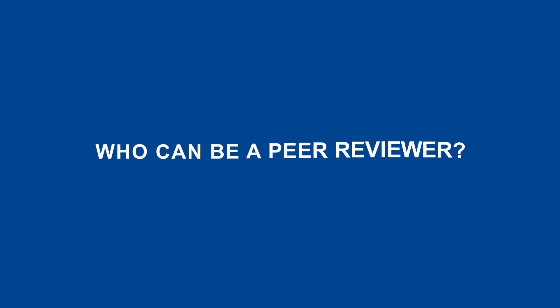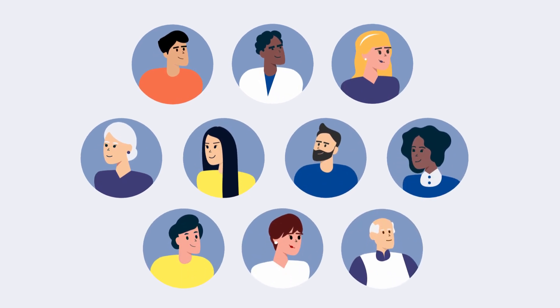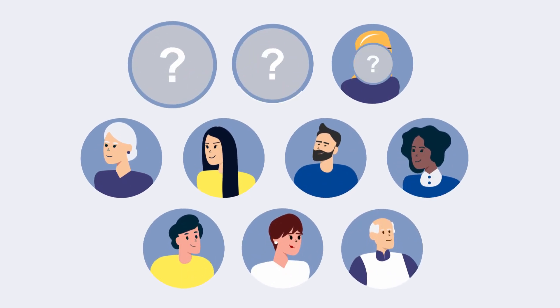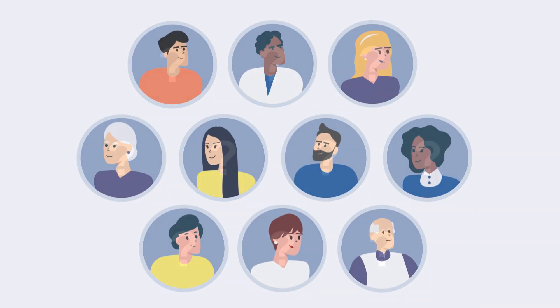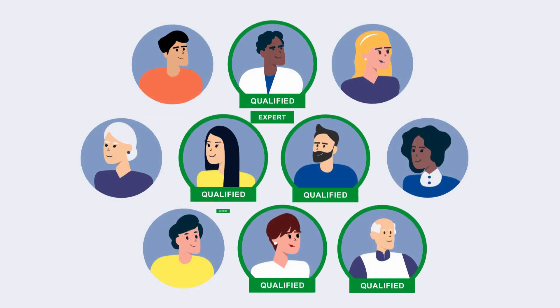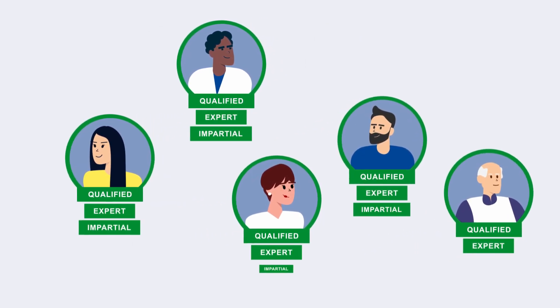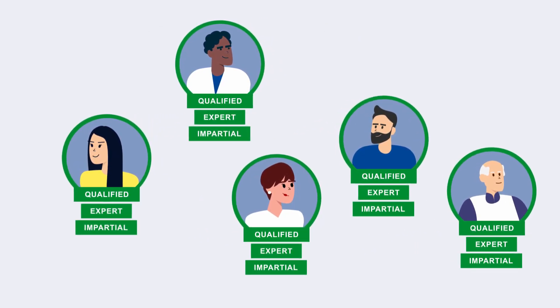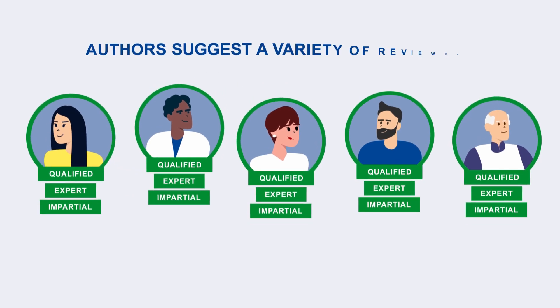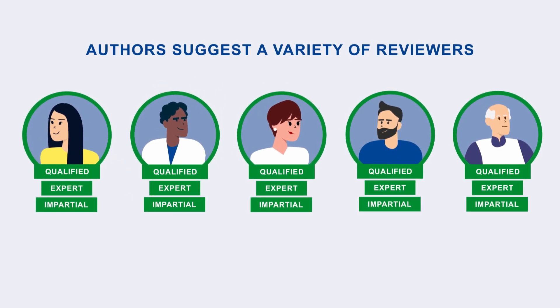So, who can be a peer reviewer, and what should authors consider when selecting their reviewers? There are some key criteria that reviewers must meet. Reviewers must be qualified — they must be an expert in their field, and they should be impartial with no competing interests. We advise authors to suggest a variety of reviewers across the globe to give a balanced perspective.